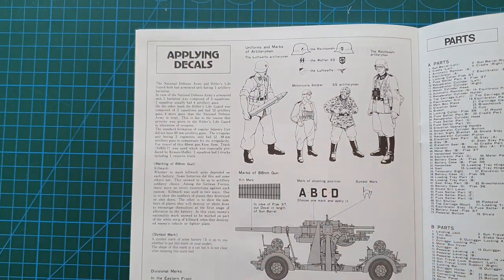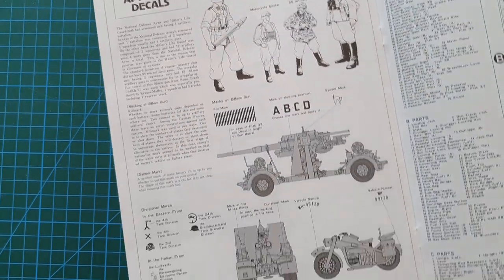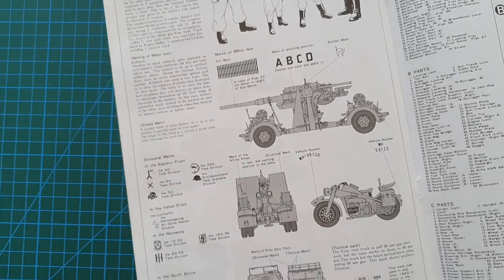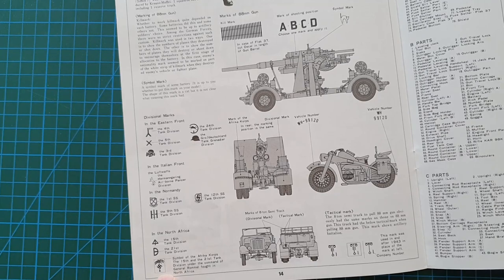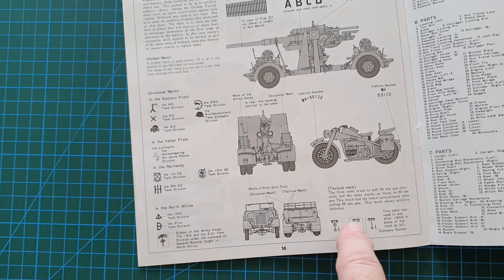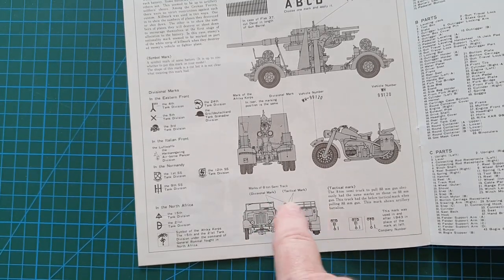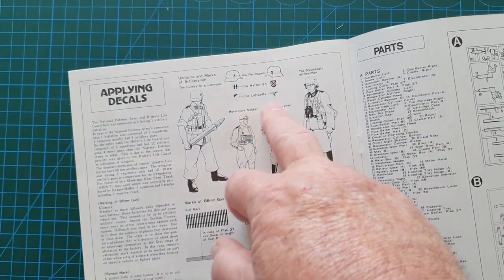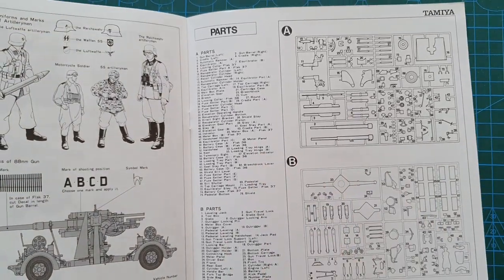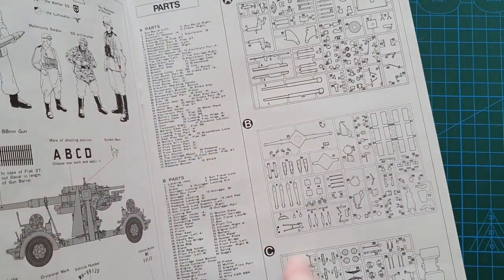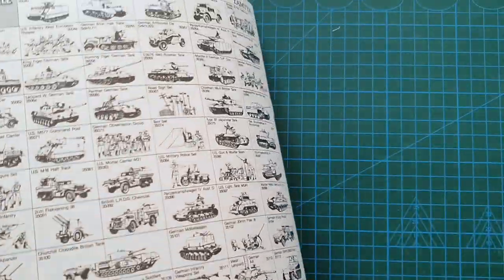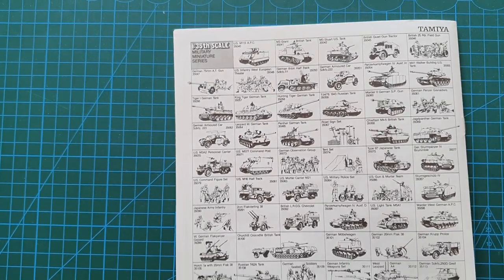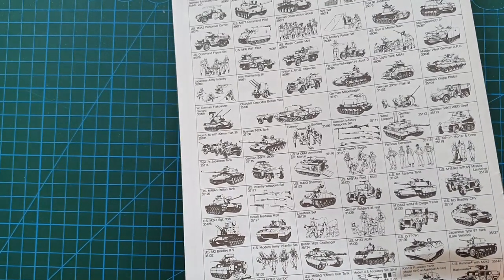Then you get to applying decals. You do get helmet decals and battery decals, kill marks, divisional marks, Italian front marks, North Africa marks which is your Africa Corps markings. It does show you the markings that go on your 8-ton tractor. The Zundapp only gets number plate markings but it's quite inclusive, especially as you do get helmet decals as well. Then you have your sprue layout with a full parts list, so classic old style Tamiya. On the back, a complete list of all the classic Tamiya kits from the 70s.